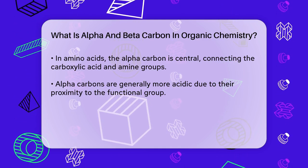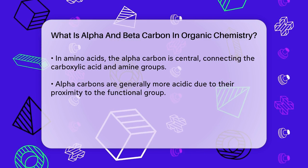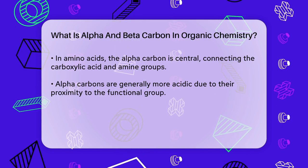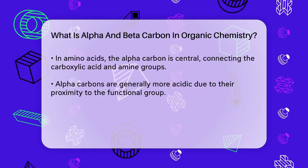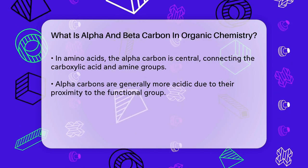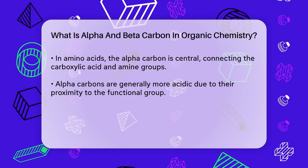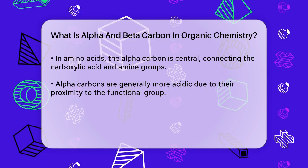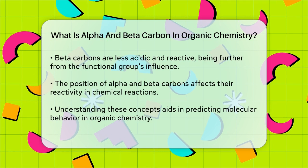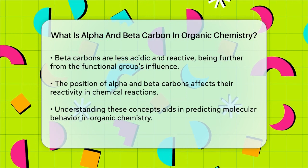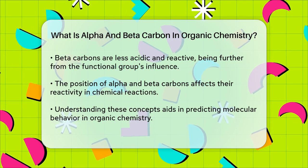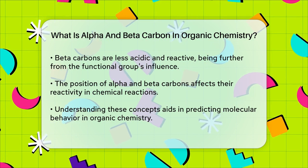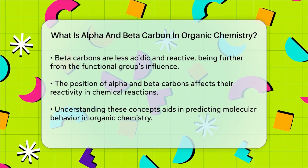The difference between alpha and beta carbons is not just about their position — it also affects their reactivity. Alpha carbons are generally more acidic because they are closer to the functional group, which can pull electrons away from the alpha carbon, making the hydrogen atoms attached to the alpha carbon more likely to be involved in chemical reactions. Beta carbons, on the other hand, are less acidic and less reactive because they are further away from the functional group's electron-withdrawing effect, meaning their hydrogen atoms are less likely to participate in chemical reactions.